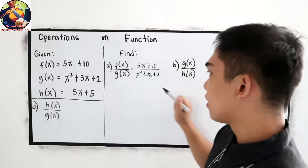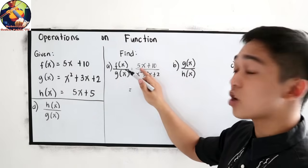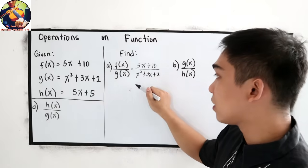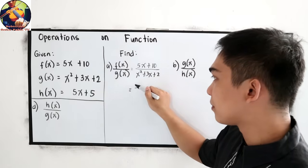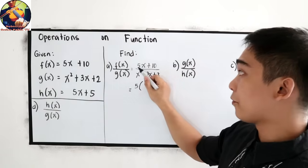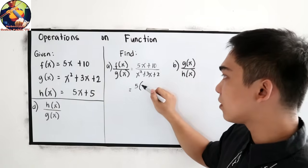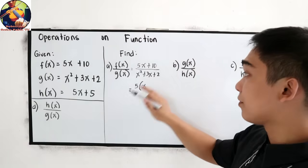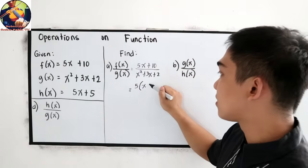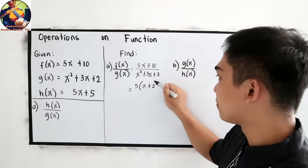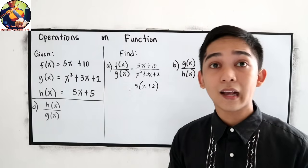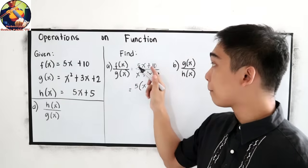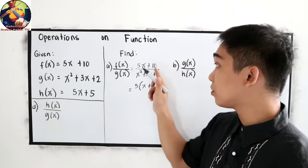For the numerator, let us use the greatest common factor. So the GCF in our numerator is 5. So 5x divided by 5 gives us x. 10 divided by 5 gives us 2. Let us check: 5 times x is 5x, plus 5 times 2 is 10.